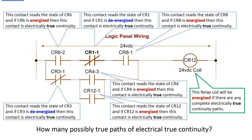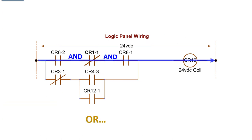How many possible true paths of electrical true continuity do we have here? Here's the first one. If CR6 is energized, and CR1 is de-energized, and CR8 is energized, then energize CR12.